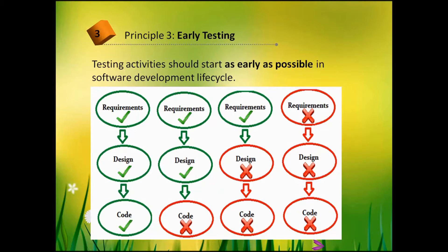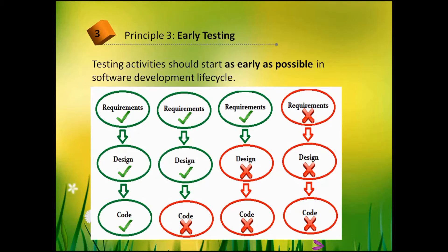The third principle: early testing. Testing activities should start as early as possible in the software development life cycle, because it is cheaper to fix a defect if it was discovered in the early stage. Option one: requirements are identified and correct, the system is designed properly, code is written according to requirements and design documentation without mistakes — product works as expected.